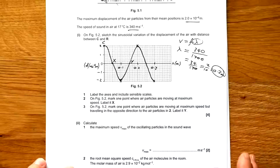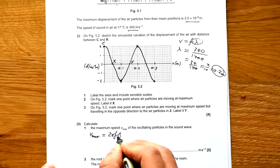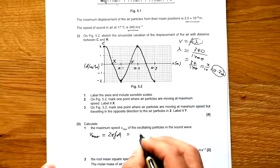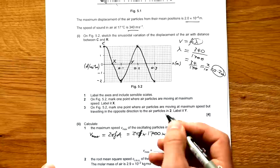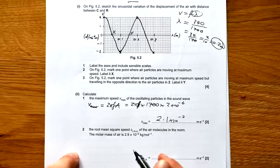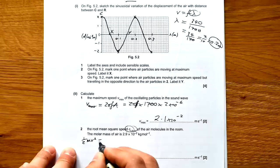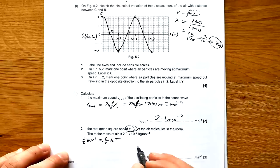Calculate the maximum speed v_max of the oscillating particles in the sound wave. So this is SHM. Here we go. So we have v_max equals 2 pi f a. Speed is 2 pi f root a squared minus x squared. But if we're looking for v_max, it's just this. So that's 2 pi times 1700 times our amplitude, which is 2 times 10 to the minus 6. So that gives us 2.1 times 10 to the minus 2 meters per second. Calculate the root mean square speed, CRMS of the air molecules in the room while the mass of the air is 2.9 times 10 to the minus 2 kilograms per mole. So this is kinetic theory.